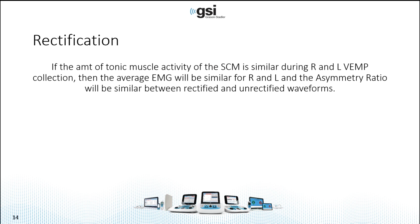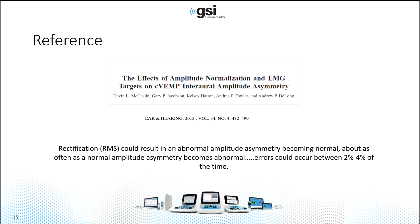With rectification, if the amount of tonic muscle activity of the SCM muscle is similar during the collection of the right and left C VEMPs, then the average EMG will be similar, and the asymmetry ratio — whether between rectified and unrectified waveforms — will also be very similar. Here is a reference where researchers looked at rectification or normalization using RMS and found that sometimes rectification will change a normal result to abnormal and vice versa. This was in a population of normal patients, so that may vary in a patient population with actual disorders. I recommend reviewing this article and others on rectification.